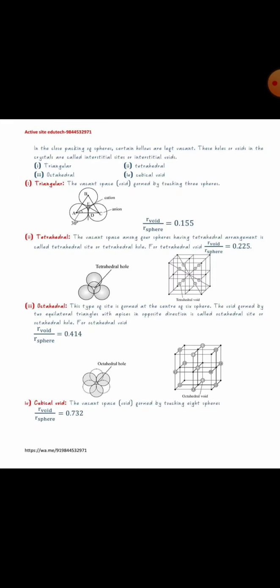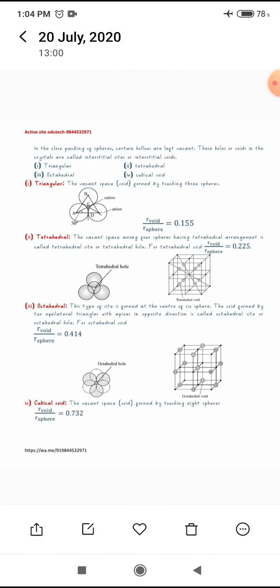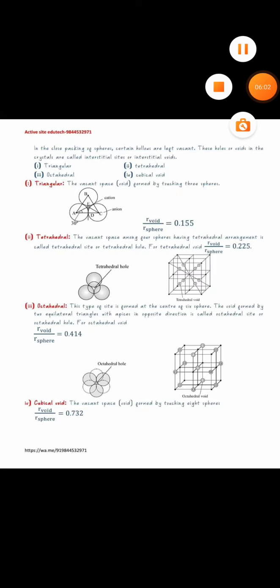The fourth type is the cubical void. A cubical void is formed when you arrange four spheres in a plane and place another plane of four spheres in the same arrangement above it. In between these eight spheres, the empty space left is a cubical void, because the spheres form a cube and the void is surrounded by this cube. These are the different types of voids formed in close packing in crystalline solids.